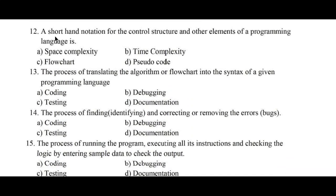Question number 12: A shorthand notation for the control structure and other elements of a programming language. Option A. Space complexity, B. Time complexity, C. Flowchart, D. Pseudocode. So here shorthand notation can be represented with the help of pseudocode. Hence option D is the right answer.